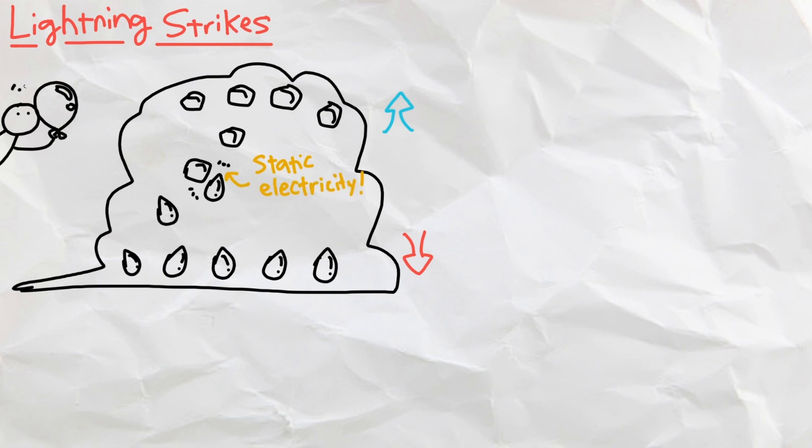Just like rubbing a balloon against our hair, the charges in a cloud separate, with a positive charge on top with the ice crystals, and negative charge at the bottom with the water droplets.